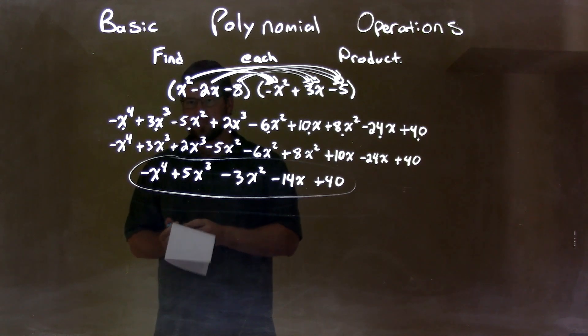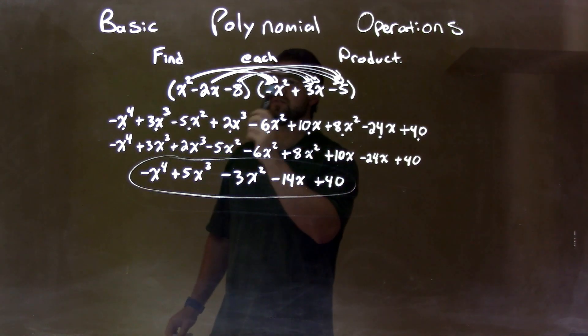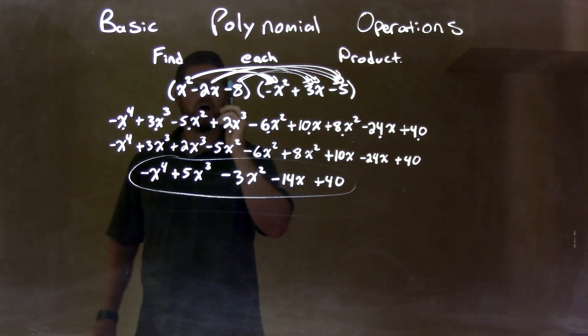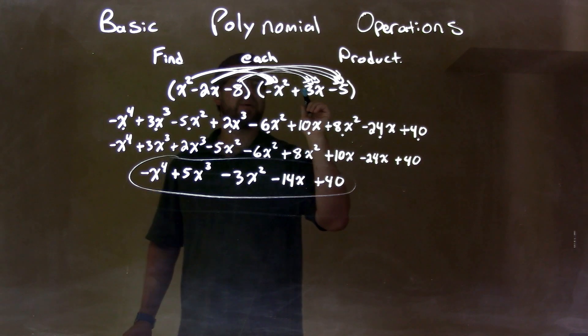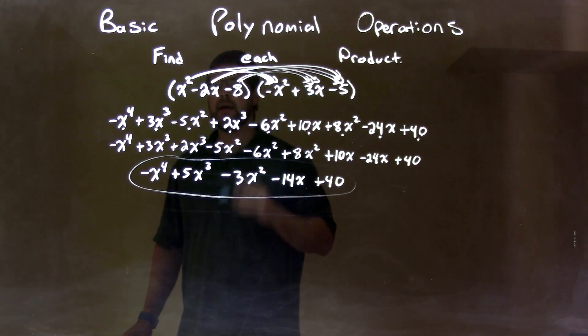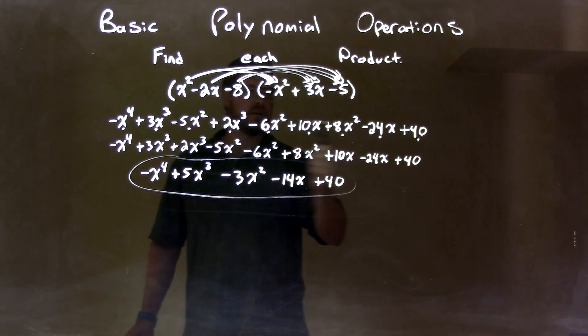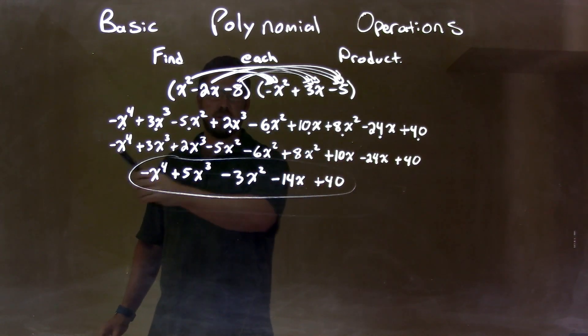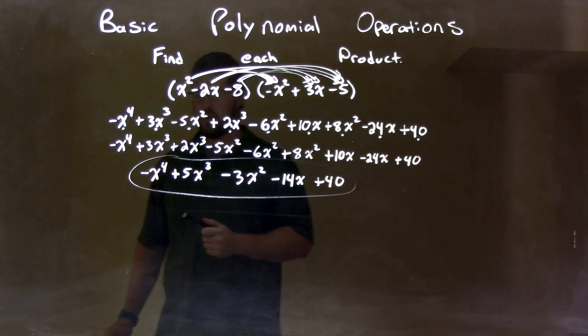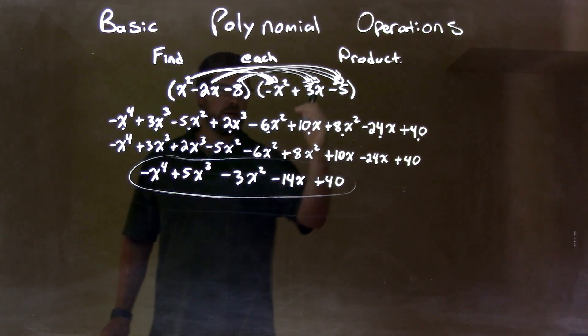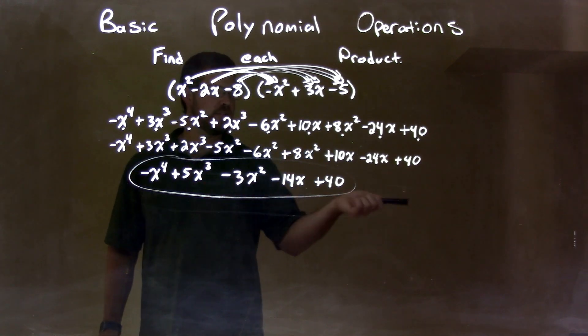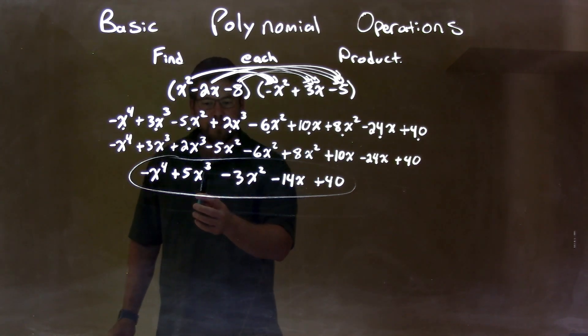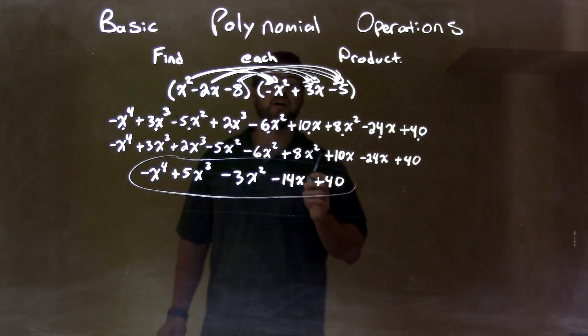So, quick recap. I was given x squared minus 2x minus 8 times negative x squared plus 3x minus 5. I multiplied all parts of my first parenthesis by all parts of my second parenthesis. In doing that, I got this whole long thing. I then rearranged that with the highest degrees first and had our like terms next to each other. I used my little dot method to make sure I didn't lose anything. Then, from there, I combined my like terms to get our final answer. Negative x to the fourth plus 5x to the third minus 3x squared minus 14x plus 40.